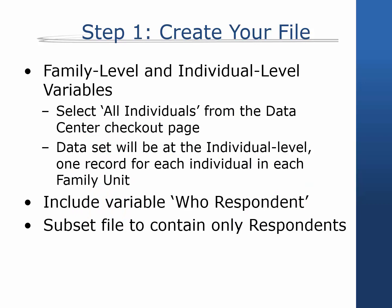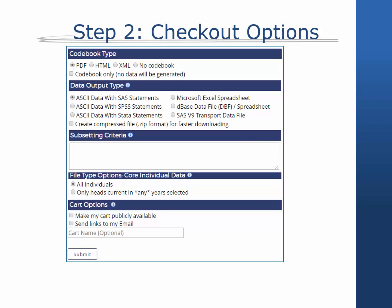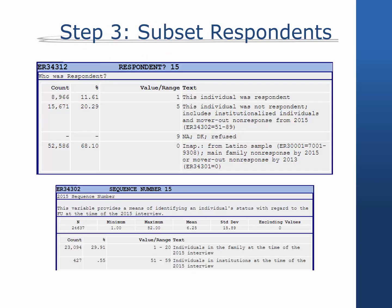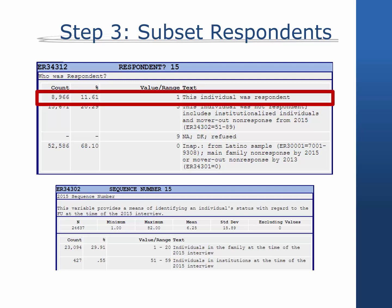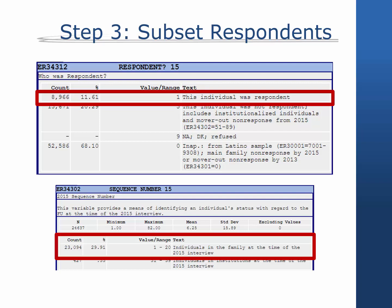Step 1: Create your file. Using the data center, indicate that you would like both family and individual level variables. Again, the data center will automatically merge information from the family file to the individual level file and produce a dataset with the individual as the unit of analysis. The file will automatically include relationship to head or reference person and sequence number. Be sure to also include from the individual level file the variable who respondent, where a value of 1 identifies if the individual is the respondent in that wave. Step 2: When you reach the data center checkout page, select the option All Individuals. Step 3: After you download your file, you will need to subset to individuals who are respondents. To do this, keep individuals with a value of 1 for who was respondent and a value of 1 to 20 for sequence number.